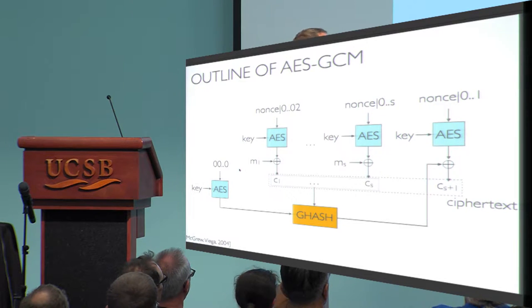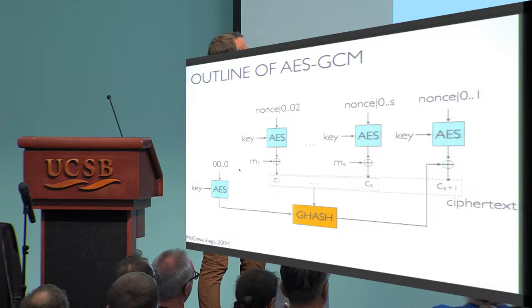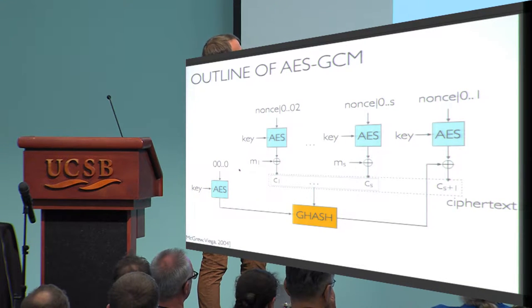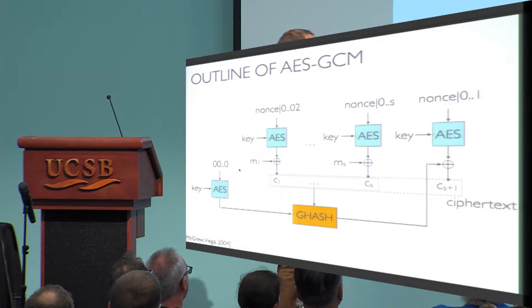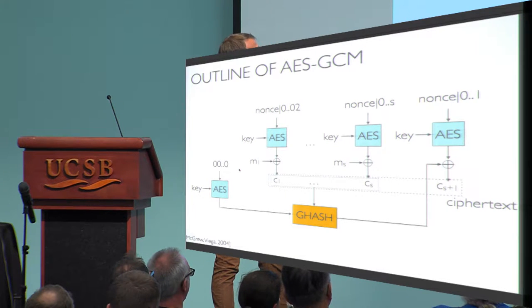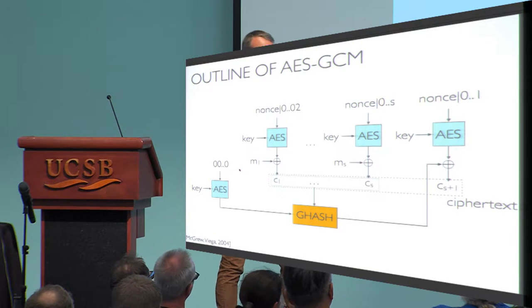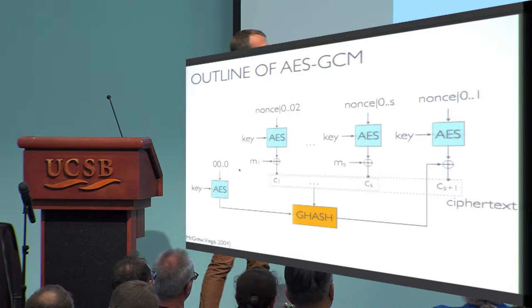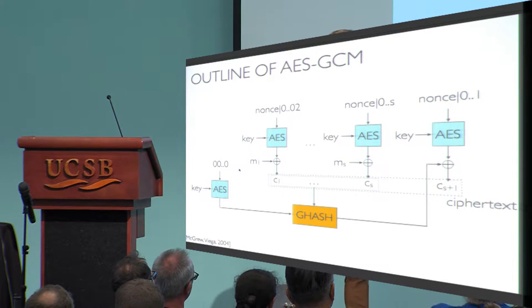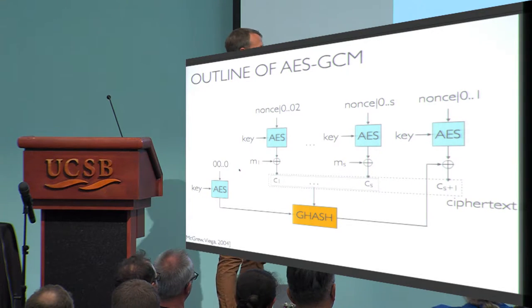We hash the ciphertext computed via counter mode — by XOR-ing message blocks with the output of the block cipher — then apply another mask value obtained from AES to get the last block of ciphertext. This is essentially a MAC, so you can think of AES-GCM as an encrypt-then-MAC scheme using counter mode and an almost XOR-universal hash function-based MAC.